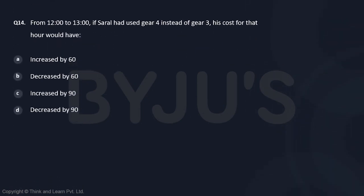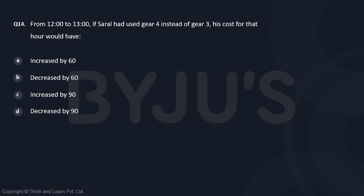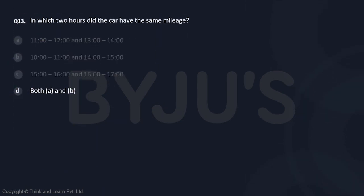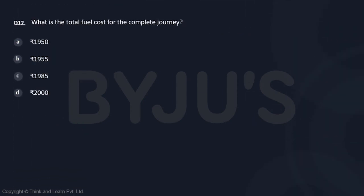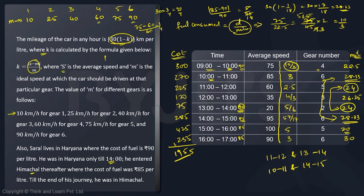The last question in the set: from 12 to 13, if Saral had used gear 4 instead of gear 3. Let us look at what happened from 12 to 13. His mileage was 26.25 and the fuel consumed is 4/3. Now if he uses gear 4, what is the mileage? Mileage for gear 4 is with average speed 35 minus ideal speed for gear 4 is 60. So k is |35 - 60| / 60, which is 25 by 60, which is 5 by 12.